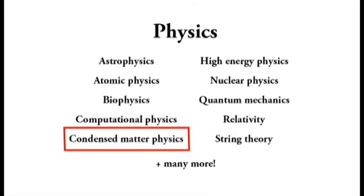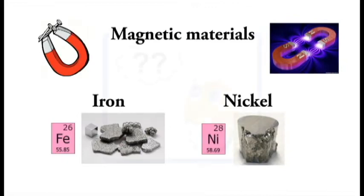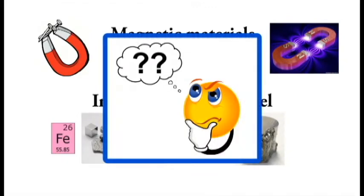Condensed matter physics is a broad branch of physics that studies the diverse properties of different phases of matter like liquids and solids. I specifically study magnetic materials like iron or nickel and think about ways they can be used for future technologies.